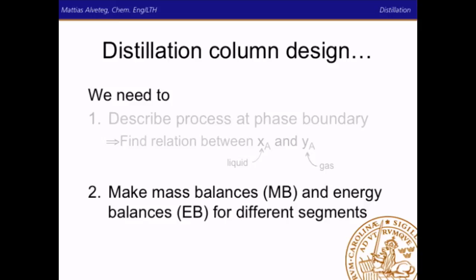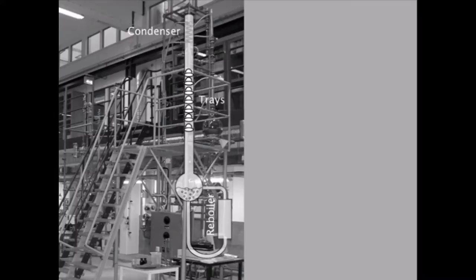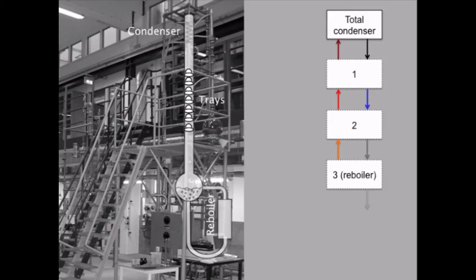Now it's time to make mass balances and energy balances for different segments. To do that we simplify and introduce the concept of equilibrium stage, also known as theoretical plate. An equilibrium stage is a segment of the distillation column where the inflows and outflows are in equilibrium with each other. You have a physical setup with a certain number of trays, and you convert that into a mathematical model with a number of equilibrium stages. How many depends on how efficient the trays are.